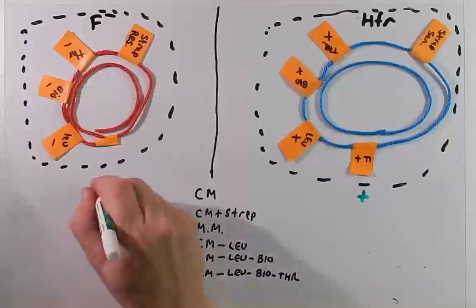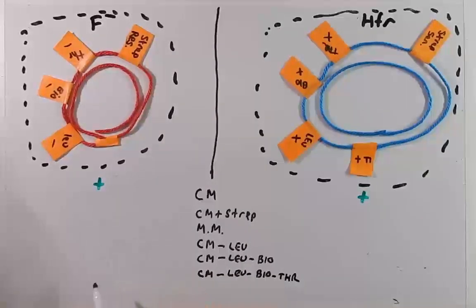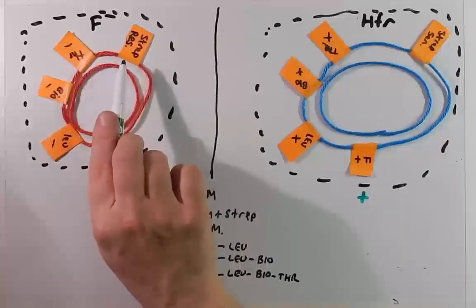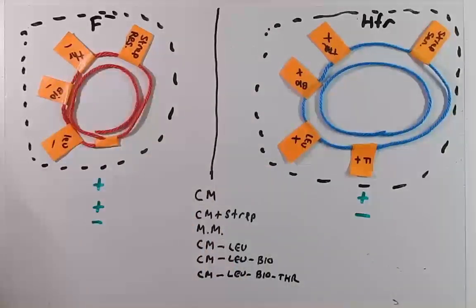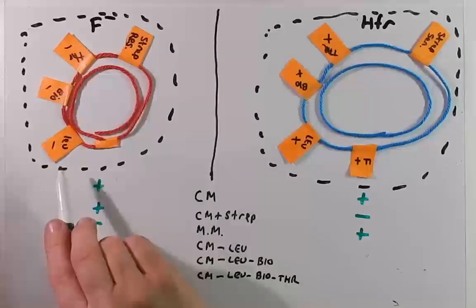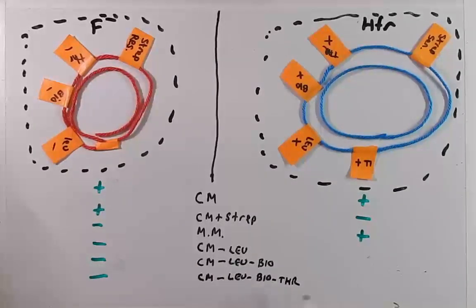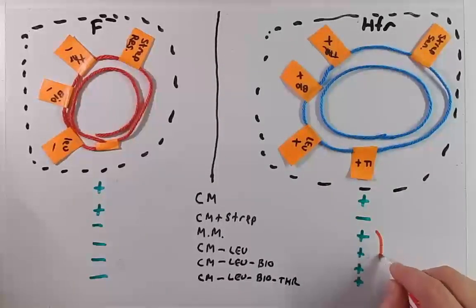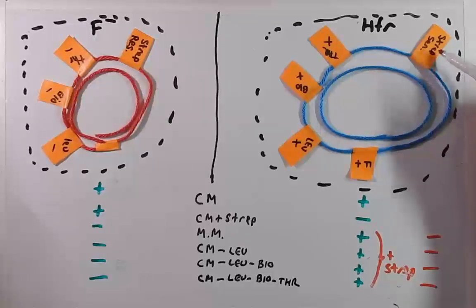On complete medium, both cells will grow because complete medium has everything they need. On complete medium plus streptomycin, the F-minus cell will grow because it has streptomycin resistance, but the HFR strain cannot because it is sensitive. On minimal media, the F-minus strain can't survive because it can't make all those nutrients, but the HFR strain could. The same applies to the next three media — the F-minus strain cannot grow on complete media lacking leucine, biotin, or threonine, because it cannot make those nutrients. The HFR strain could, because it can make its own leucine, biotin, and threonine — but if streptomycin were added, it would not grow because it does not have the streptomycin resistance gene.